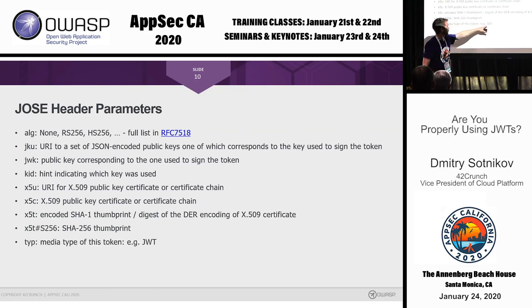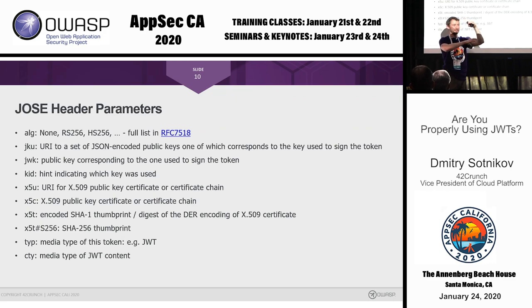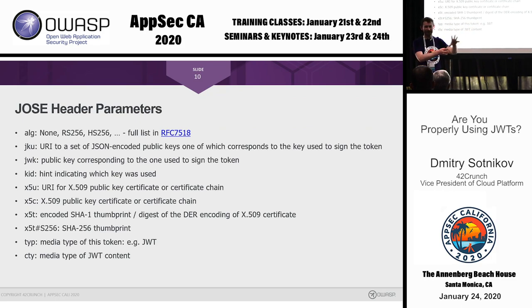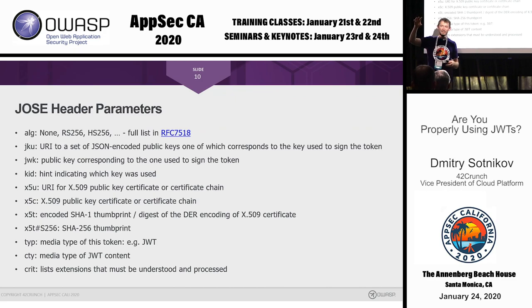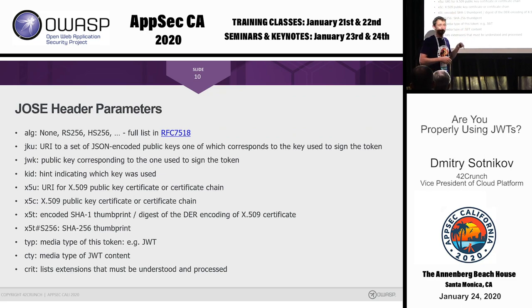You can also specify the media type — sometimes JSONs can be multi-level, with an extra header indicating a nested media type. The standard is extensible, so you can add your own headers and use the critical set parameter to declare which extra headers are included, requiring the client to be able to process them. All of these parameters are optional, but together they tell the API what to use and how to check your token.